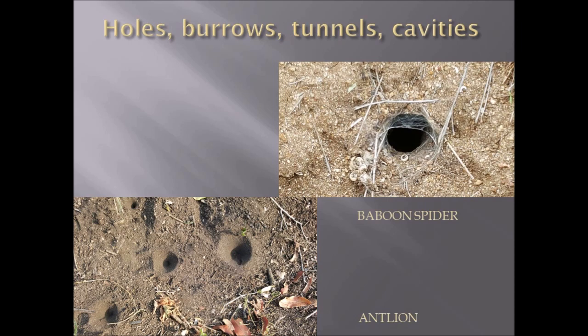Holes, burrows, tunnels and cavities are another sign category. On the top right you see the burrow of a burrowing spider. You can also see white circular rings, which are the remains of a millipede that the spider would have fed on. The cone-shaped holes are the holes of antlion larvae, which are used for capturing their prey.